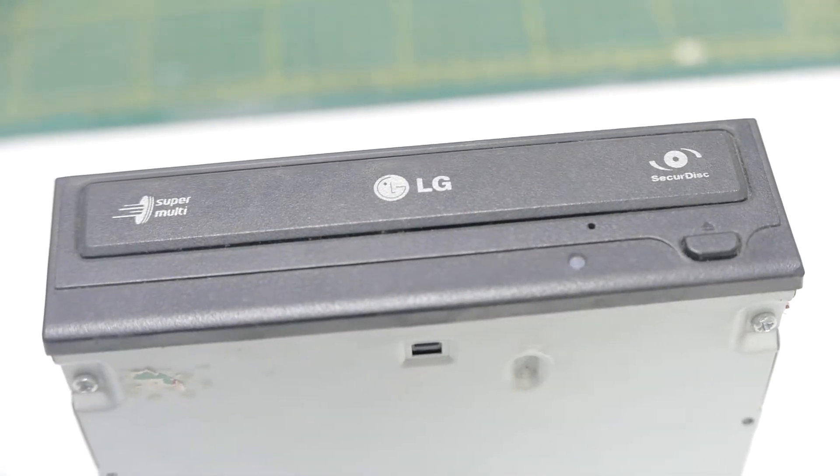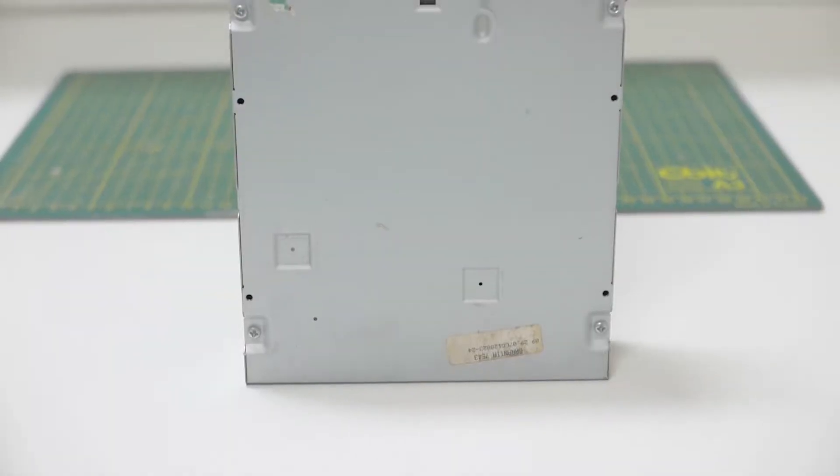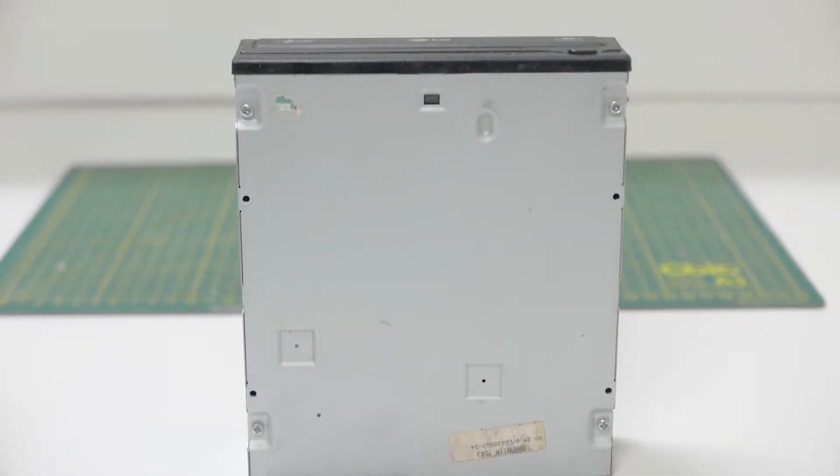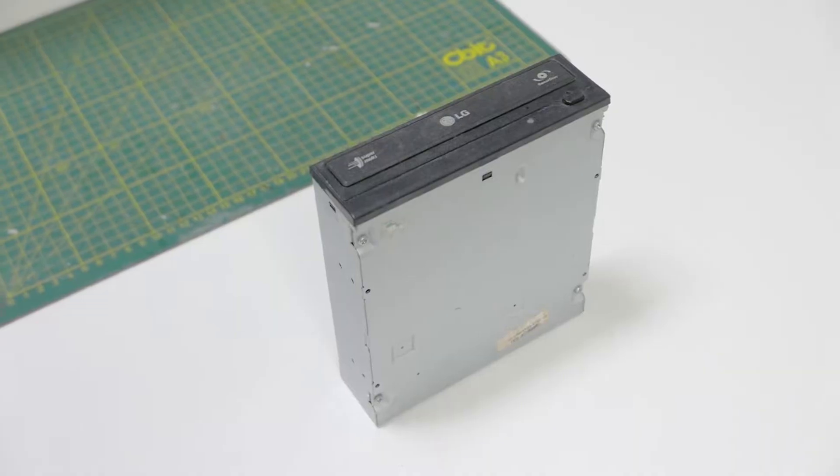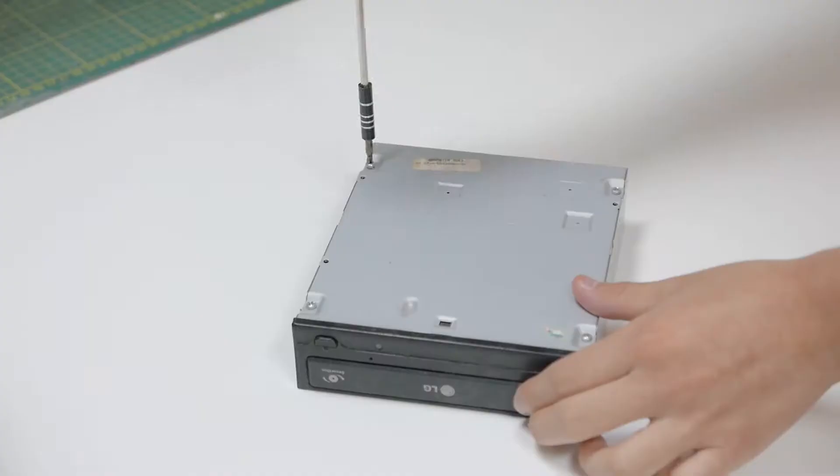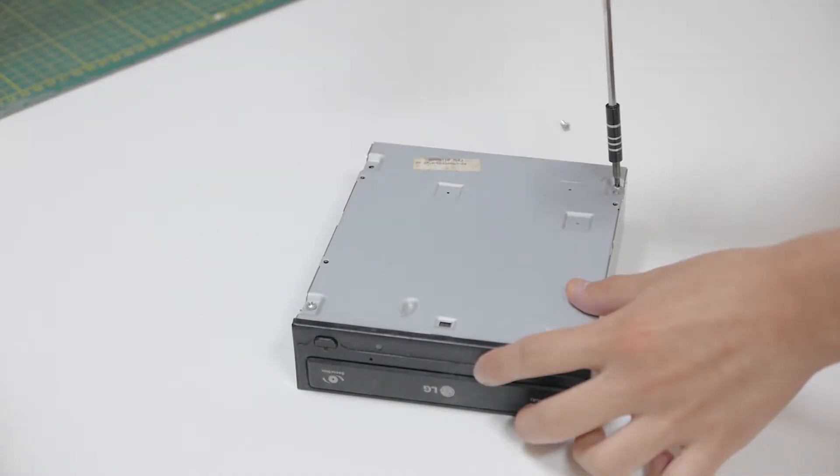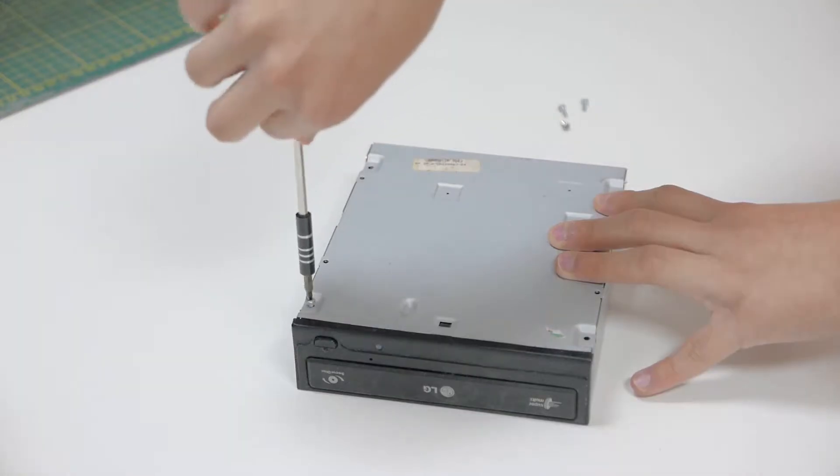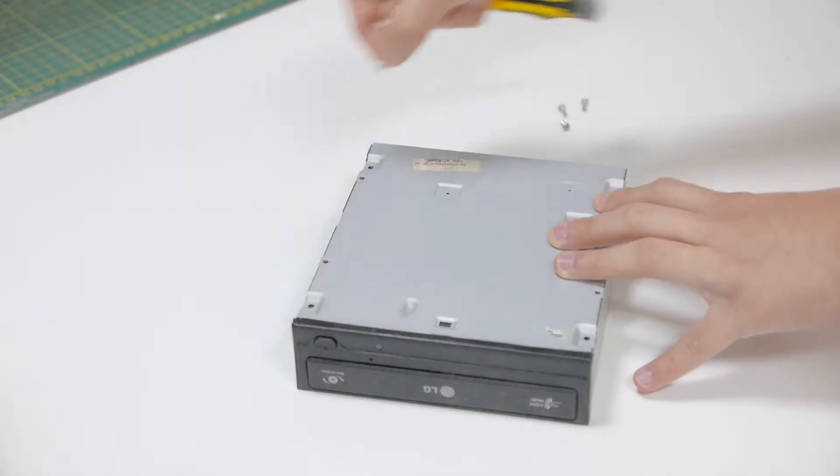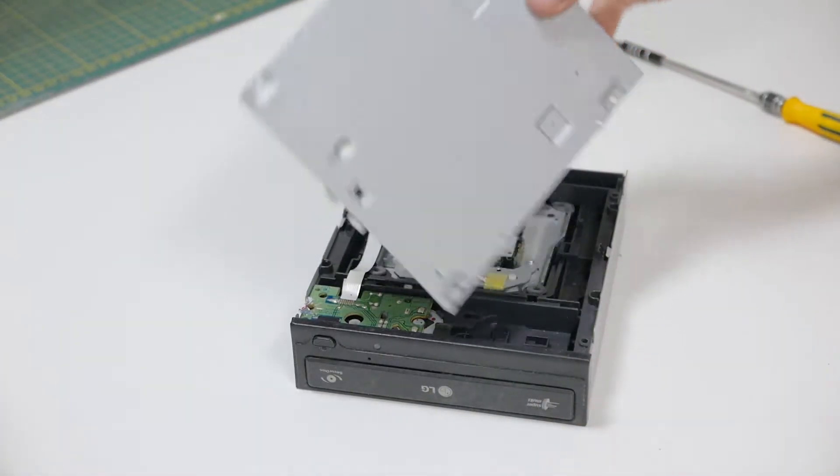To start with this project we are going to bring two readers that we no longer use. In my case I have this one that I bought used at a good price. We unscrew the four screws of the metal cover and now we uncover it to access the circuits and the mechanism inside.